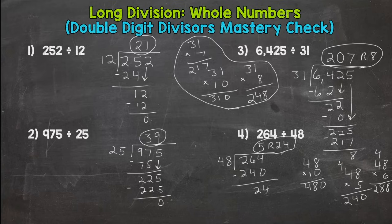So that's it for the double digit divisors mastery check. Hopefully you had three or four correct out of the four. And if you are ready to move on from long division of whole numbers, single and double digit divisors, you are ready to divide decimals. I dropped the link down to that video down in the description. So I will see you over at dividing decimals next. Thanks for watching.